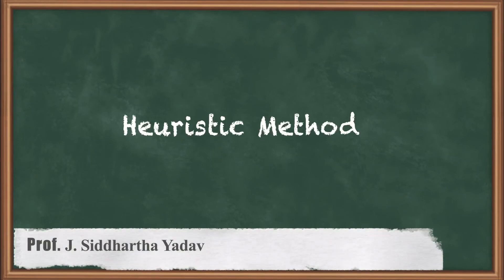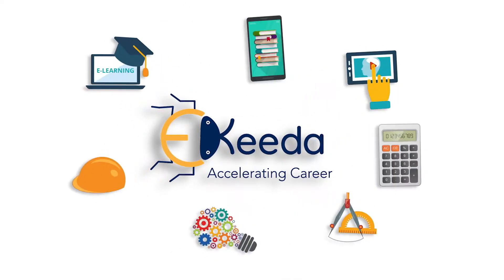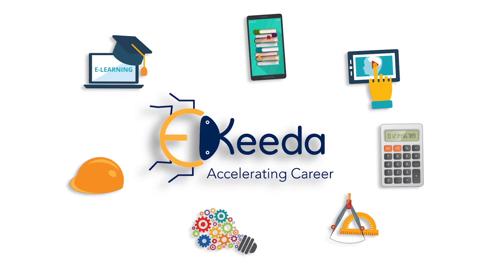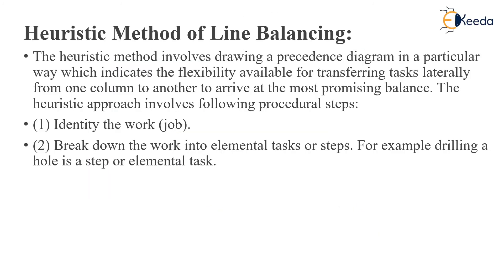Hi all, welcome to this course on Production Planning and Control. Today we will be learning about heuristic methods. Heuristic methods of line balancing involve drawing a precedence diagram in a particular way which indicates the flexibility available for transferring tasks laterally from one column to another to arrive at the most promising balance. The heuristic approach involves the following procedural steps.